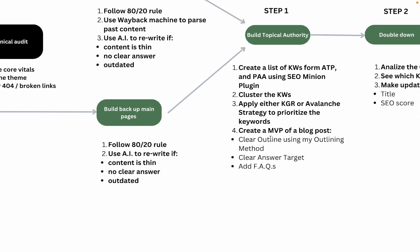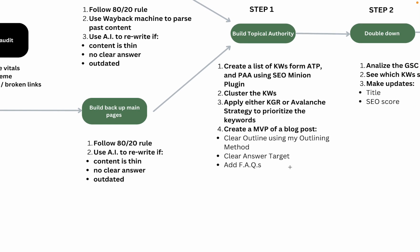Then create an MVP blog post. I'm not a huge advocate of optimizing content at the beginning or spending hours on a single piece. I'd rather let Google tell me what has more potential, so I write content as fast as possible while keeping three things in mind: the outline should be as detailed as possible; every piece of content should have a clear instant answer target — for example, if my article is 'Can dogs eat bananas?' my first H2 would paraphrase that question and answer it directly in under 150 words.